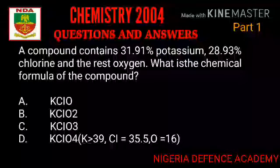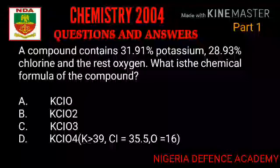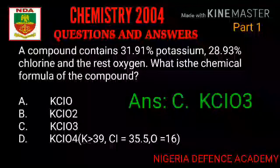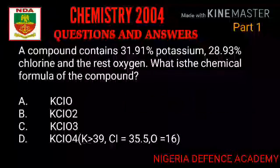Now the next question: a compound contains 31.91% potassium, 28.93% chlorine, and the rest is oxygen. What is the chemical formula of the compound? Potassium has mass number 39, chlorine approximately 35.5, and oxygen has mass number 16. Option A: KClO. Option B: KClO2. Option C: KClO3. Option D: KClO4. The right answer is option C — KClO3 (potassium chlorate).